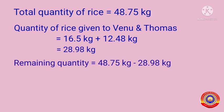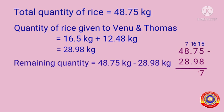Now we have to find out the remaining quantity. Remaining quantity is equal to 48.75 kilograms minus 28.98. We can't subtract 8 from 5, so borrow from the next number — 5 becomes 15 and 7 becomes 6. Then 15 minus 8 is equal to 7. Next, we can't subtract 9 from 6, so borrow again — 6 becomes 16 and 8 becomes 7. Then 16 minus 9 is equal to 7. Put a decimal point here.